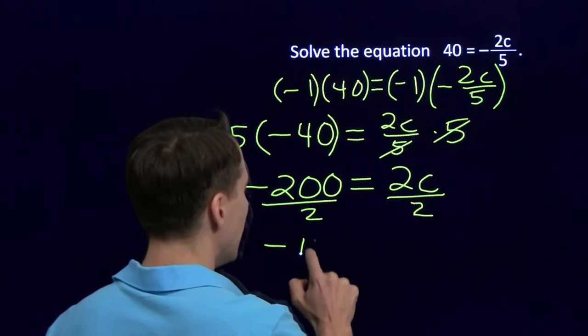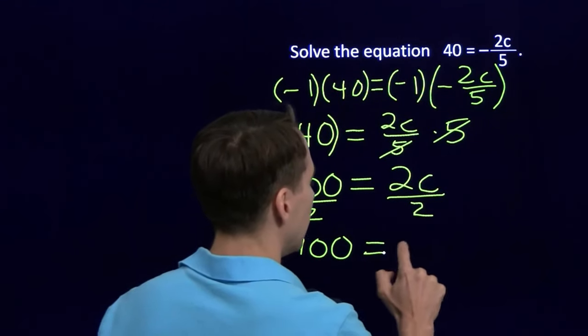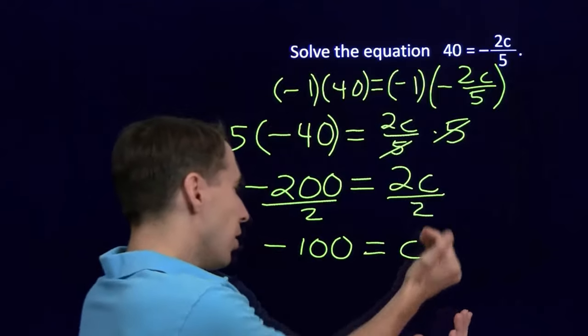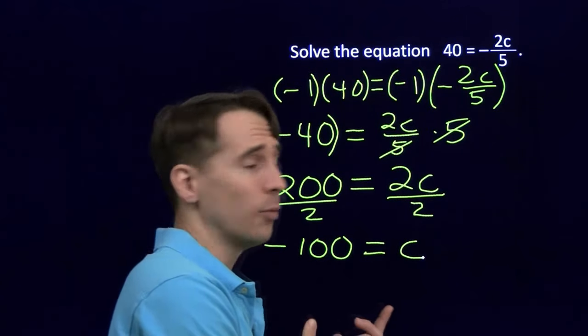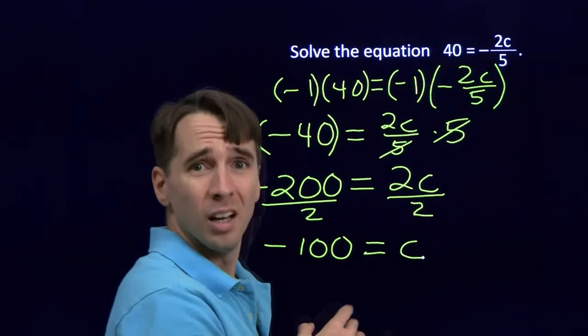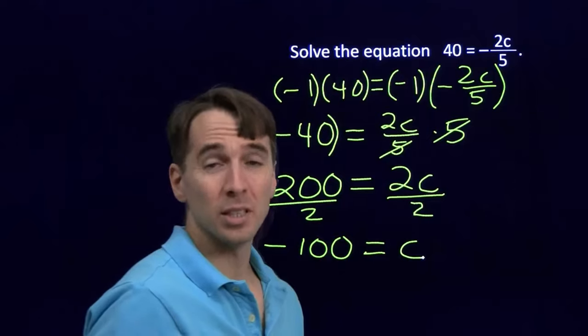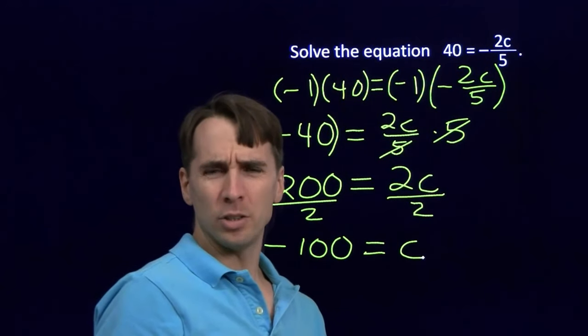Divide off the 2, and we get negative 100 equals c. We got the c all by itself. We solved the equation. C is negative 100. What's that? Oh, you don't like having to do all these steps? You want to do it in one step? You know how to do it in one step.